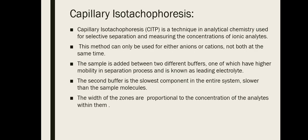The next technique is capillary isotachophoresis (CITP). This analytical technique is used for the selective separation of molecules and for measuring their concentration. This method can only be used for either anions or cations at one time, because it is used for the measurement of ionized species — only ions are detected, not both at the same time.